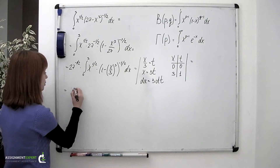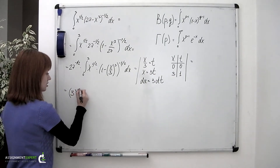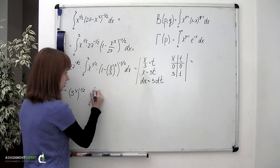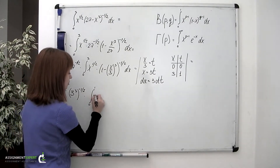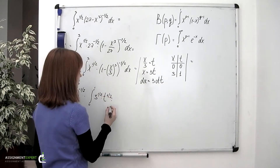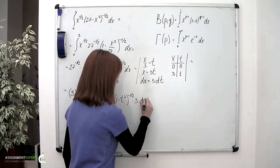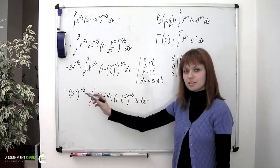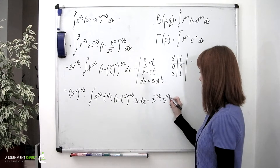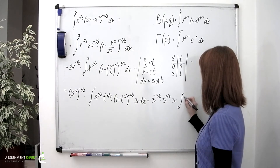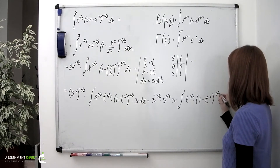Our integral is transformed into the following: 27, which we can express as 3 cubed, to the negative one-half, times the integral from 0 to 1 of 3 to the one-half times t to the one-half times (1 minus t cubed) to the negative one-half times 3 dt. We can pull all the numbers out front and obtain 3 to the negative three-halves times 3 to the one-half times 3, times the integral from 0 to 1 of t to the one-half times (1 minus t cubed) to the negative one-half dt.